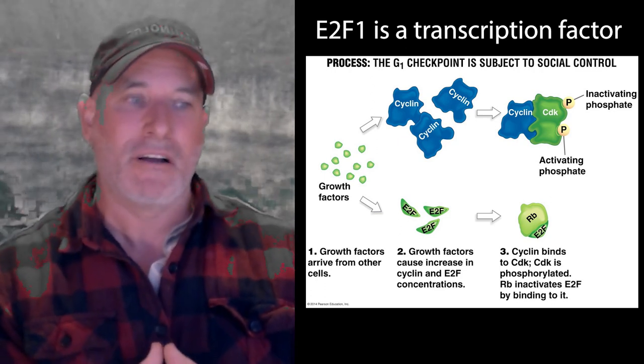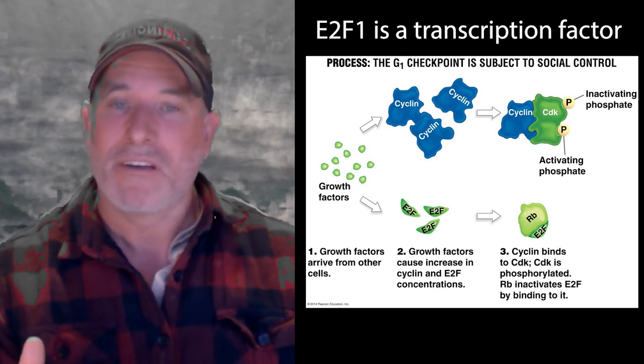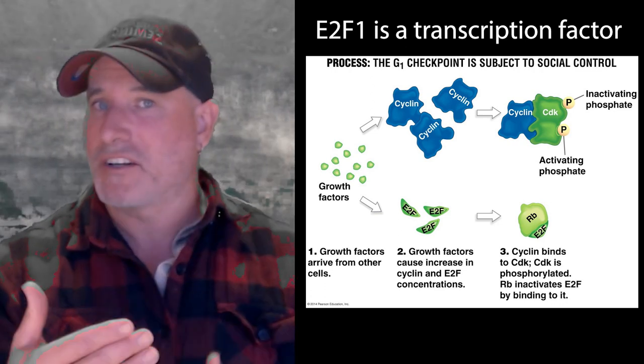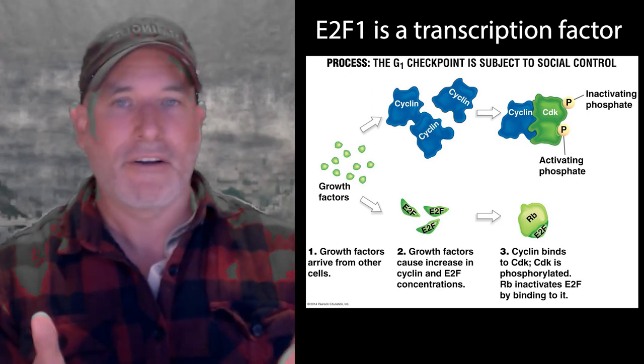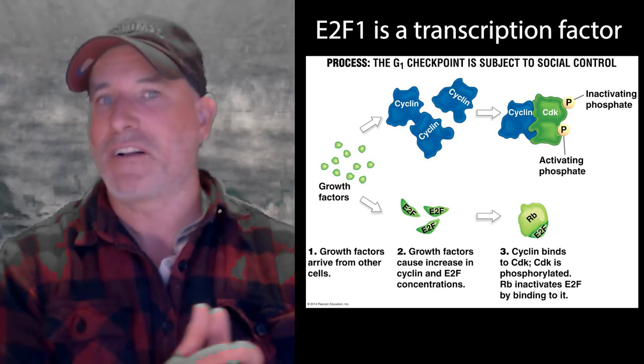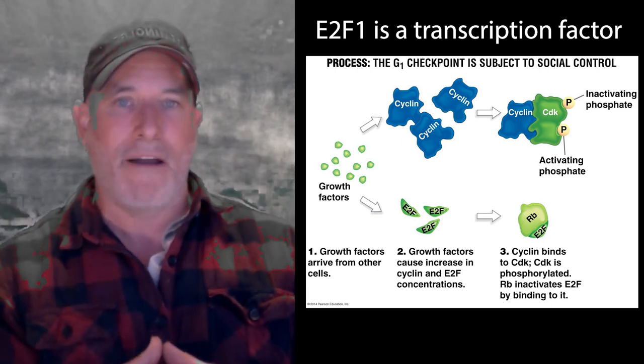You can have E2Fs that are also repressors. There are some that are activating transcription. There are some that actually inhibit transcription. But if you're following along in Freeman, those are the ones that are the activators. And specifically the one in Freeman's biology is talking about specifically E2F1.